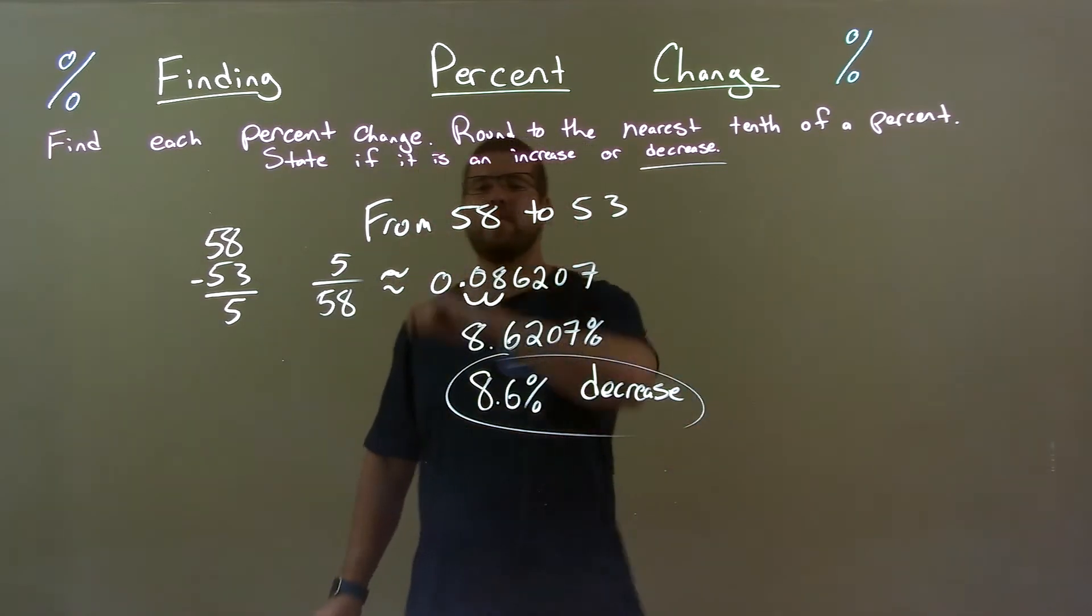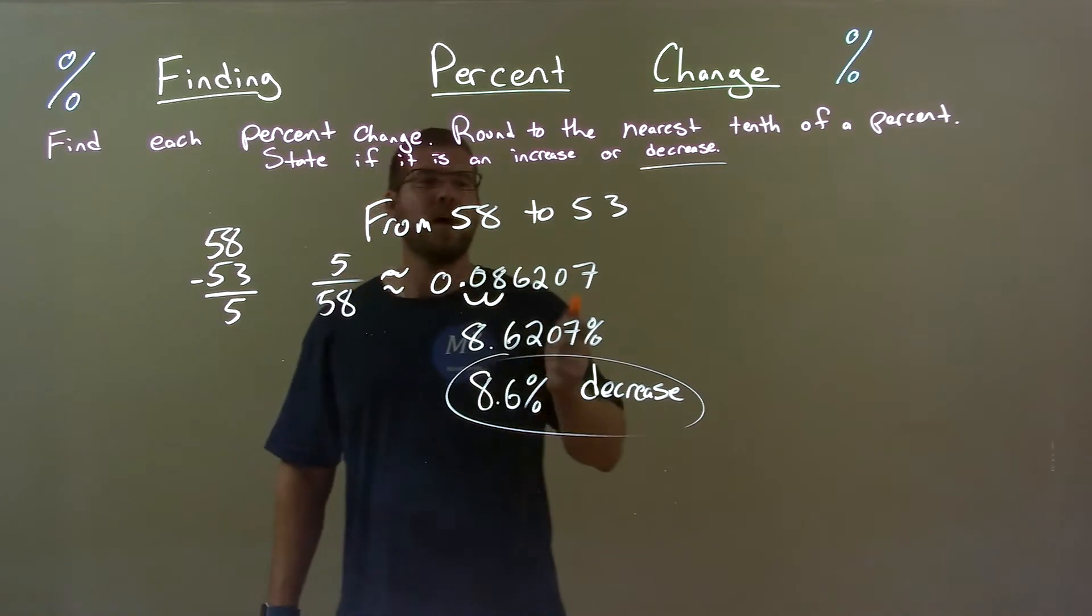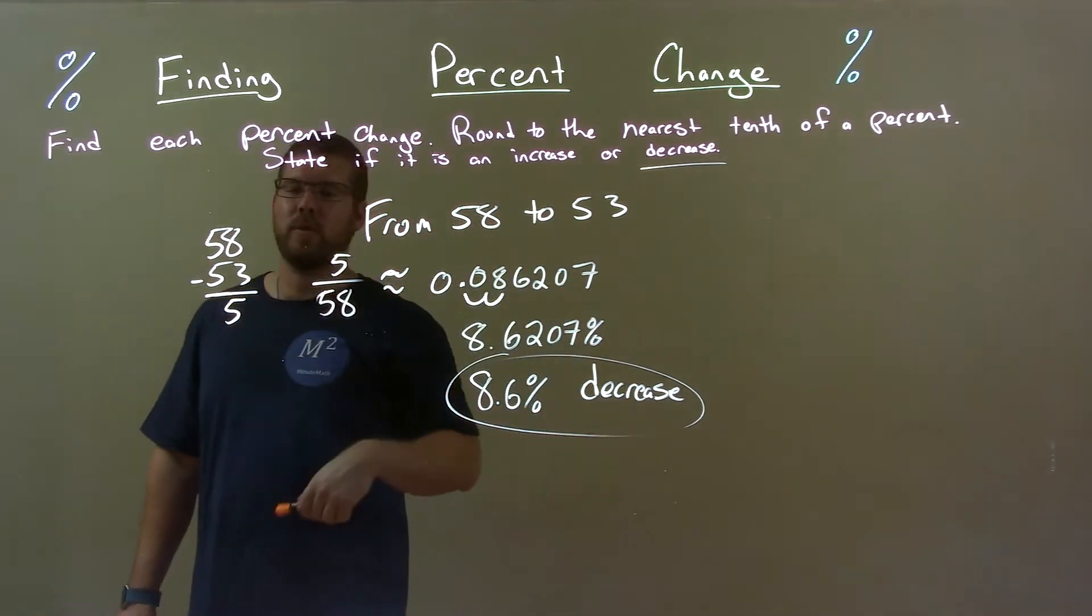Quick recap: we're given from 58 to 53 and we have to find the percent change. Well we see that's a decrease right there. We found a difference between these numbers.